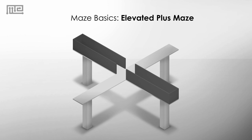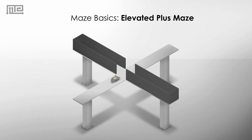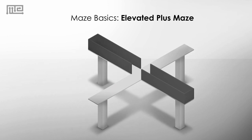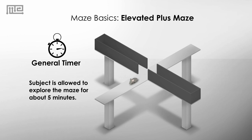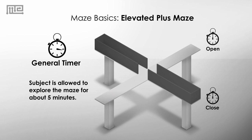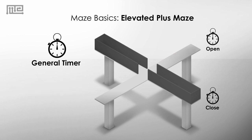This maze utilizes the natural preference rodents have for enclosed areas to test for anxiety. The animal starts in the central platform facing one of the open arms and is allowed to explore the maze for a specific amount of time. A timer is used to calculate how much time it spends on each of the arms.